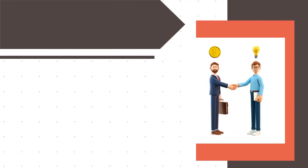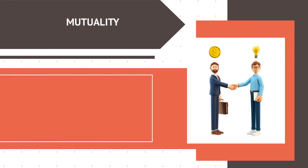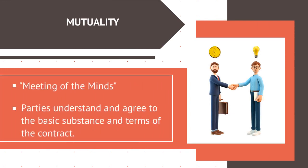Mutual assent is when the contracting parties had a meeting of the minds regarding the agreement. This means the parties understood and agreed to the basic substance and terms of the contract.